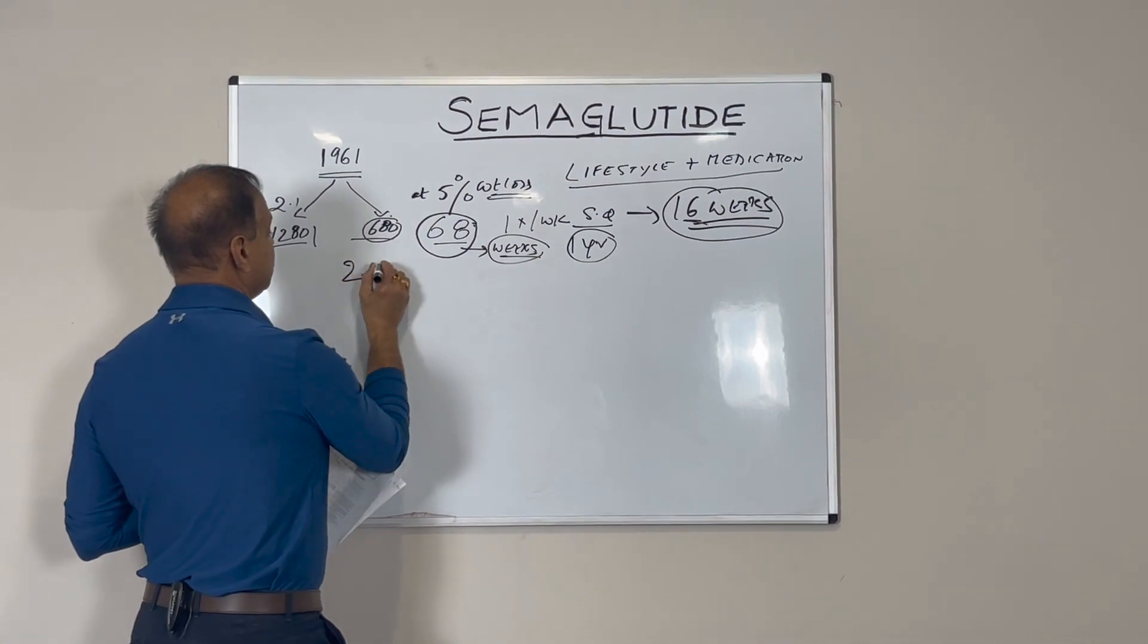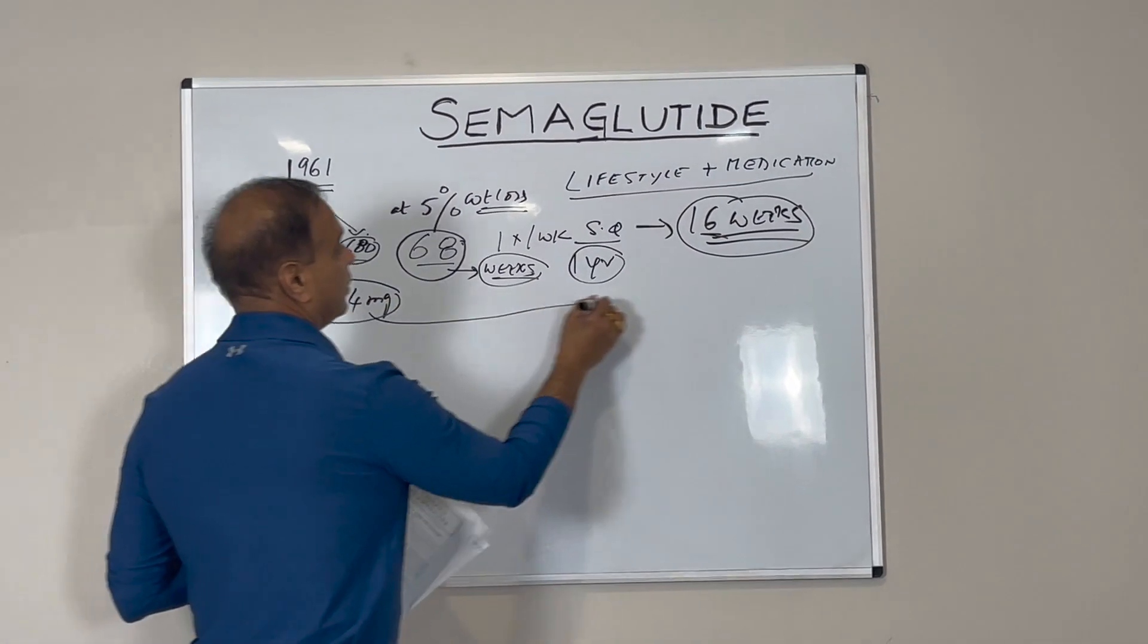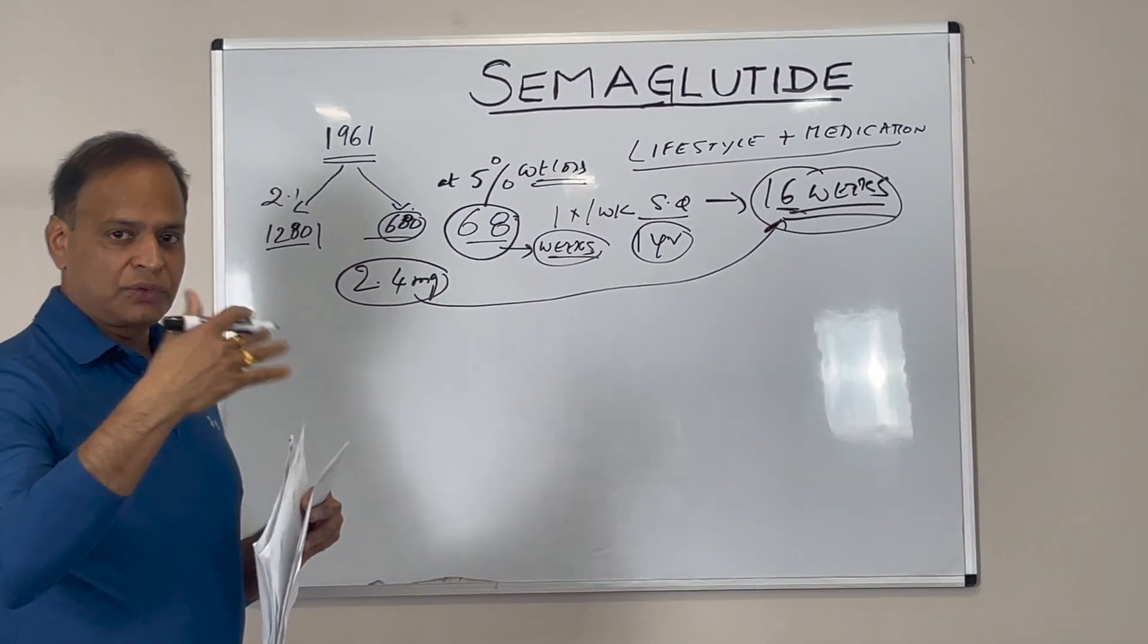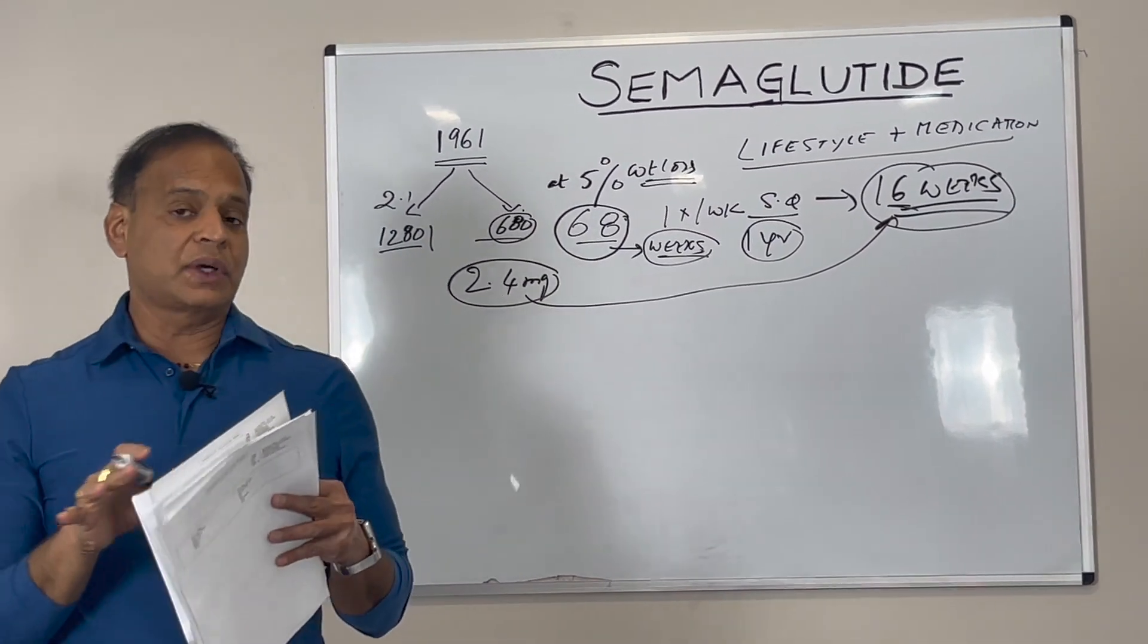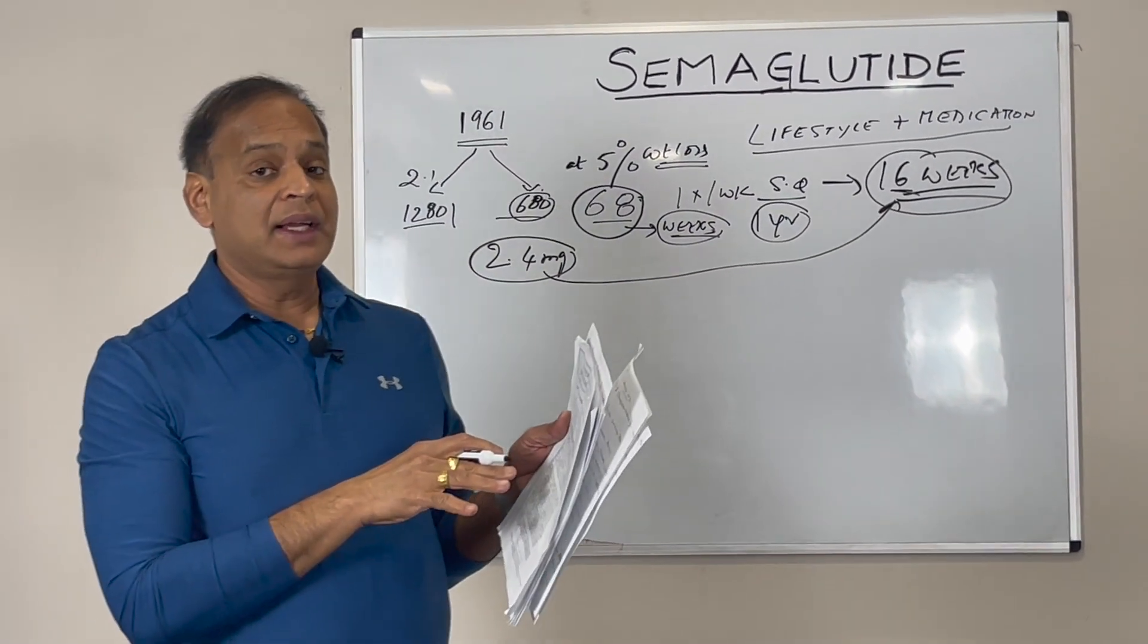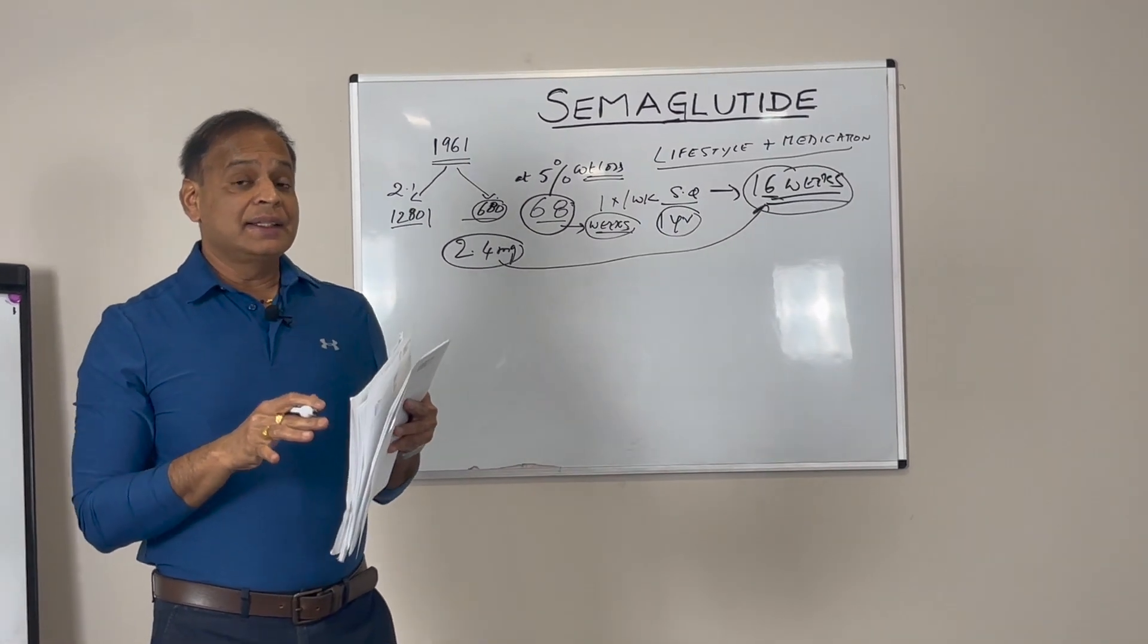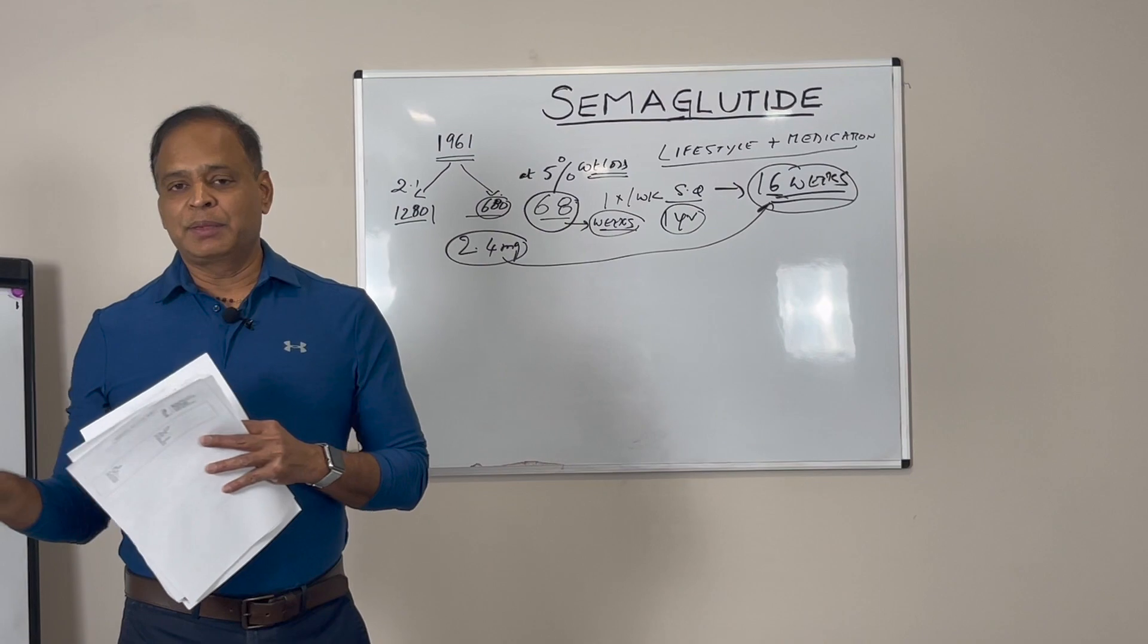The maximum dose given was 2.4 milligrams, slowly increased over 16 weeks. This medication is already used for diabetes, but this trial studied how it's used for non-diabetic patients to lose weight.